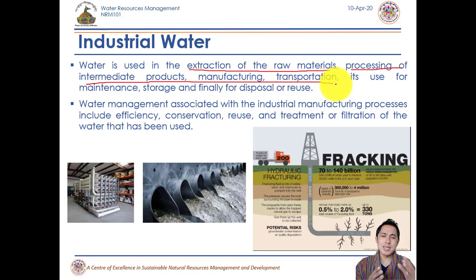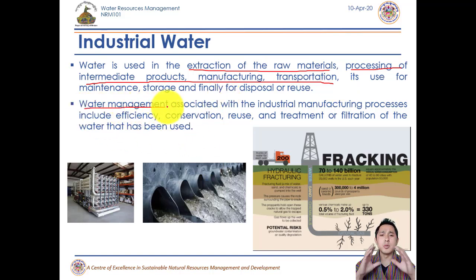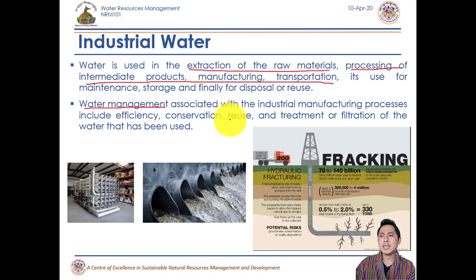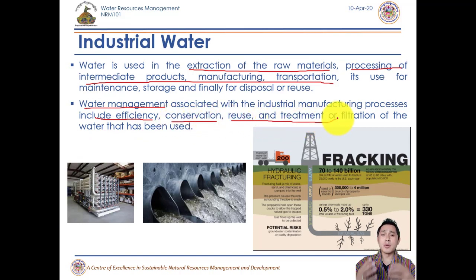Water is required in at least one stage of producing any product. Water management associated with industrial water use is about how industries can cope with increasing water scarcity — how we can decrease water loss, increase efficiency, conserve water, reuse water, and treat water. These are all water management activities related to industrial water use.